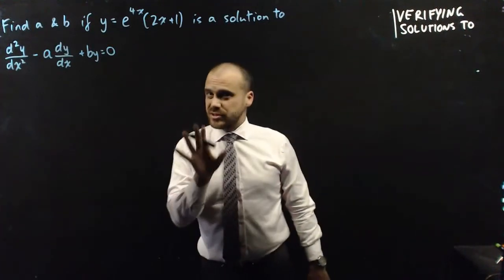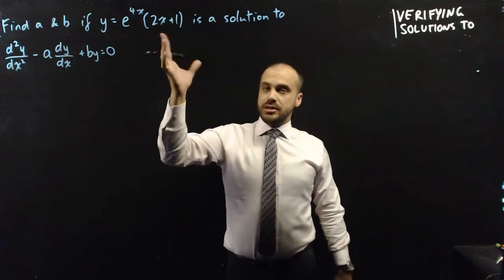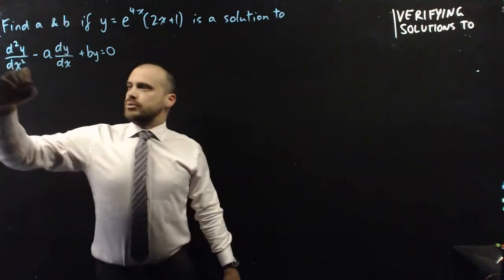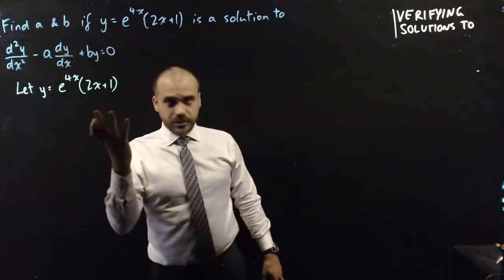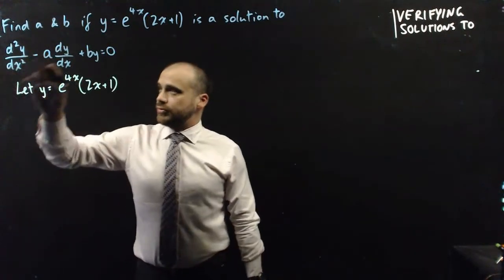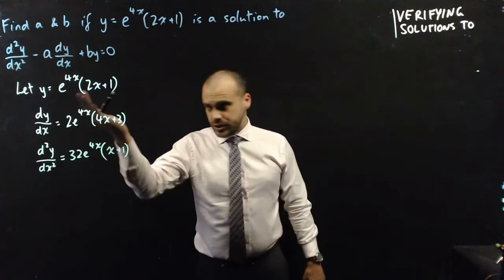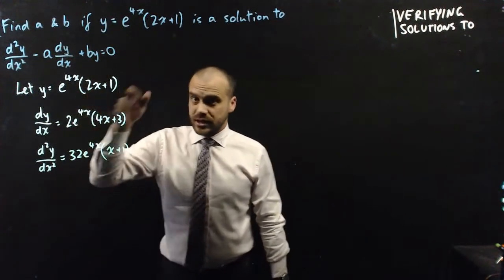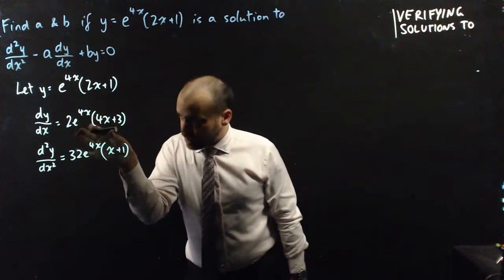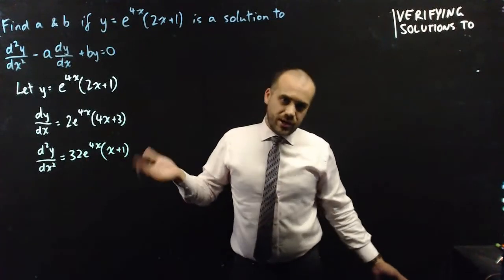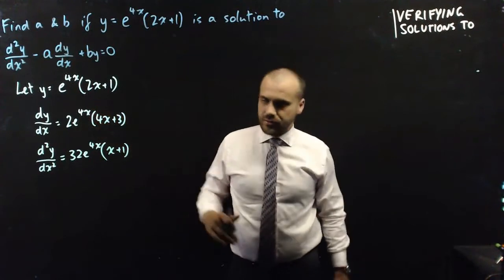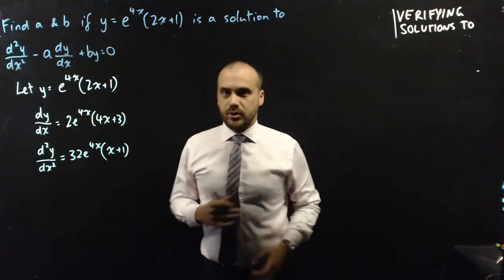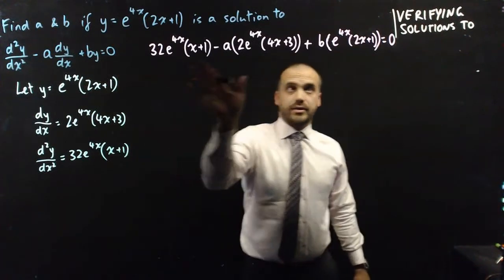Now a slightly different question using the same skills: find a and b if y equals a given expression is a solution to this differential equation. We need to let y equal that expression. The equation has a second derivative and a first derivative, so we need to calculate those — they are product rule questions with u times v. I've gone ahead and done that using the product rule to get the first and second derivatives. Now we can sub in y, dy/dx, and the second derivative into our differential equation, giving this big expression: this minus this plus this equals 0.